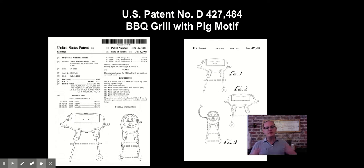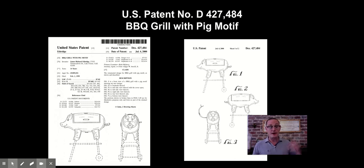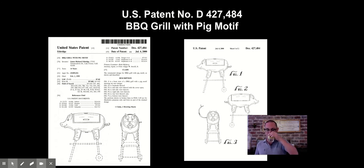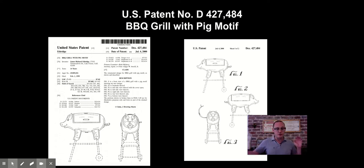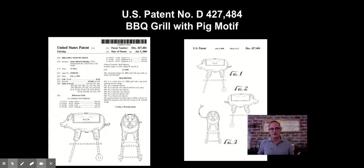There's a relatively limited amount of substantive law directed specifically to design patents, although we might start to see more as design patents are becoming increasingly significant. There are some substantive differences between design patents and utility patents. Utility patents last 20 years if renewed; design patents last 15 years without any maintenance fees. The fees are also lower, and design patents are considerably easier to get — the examination process is less rigorous and faster.